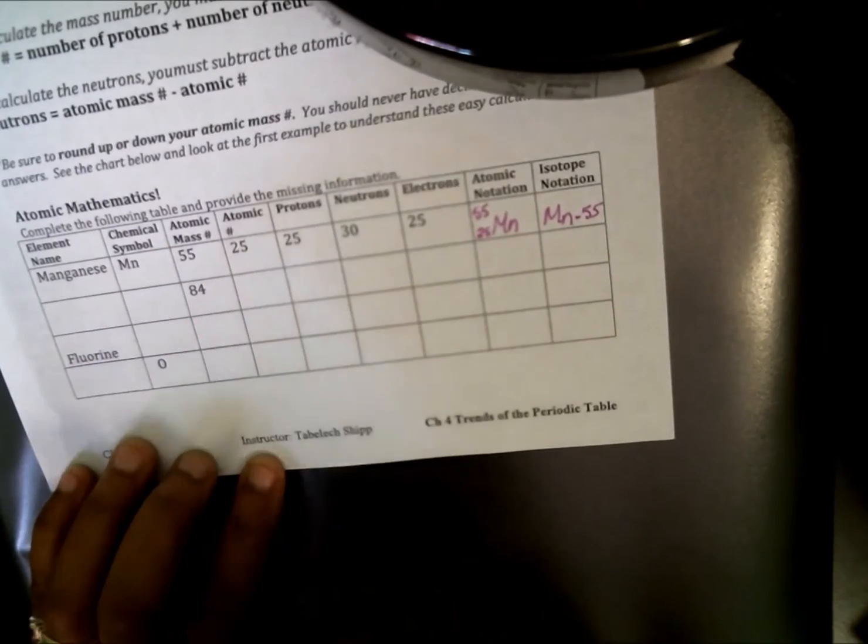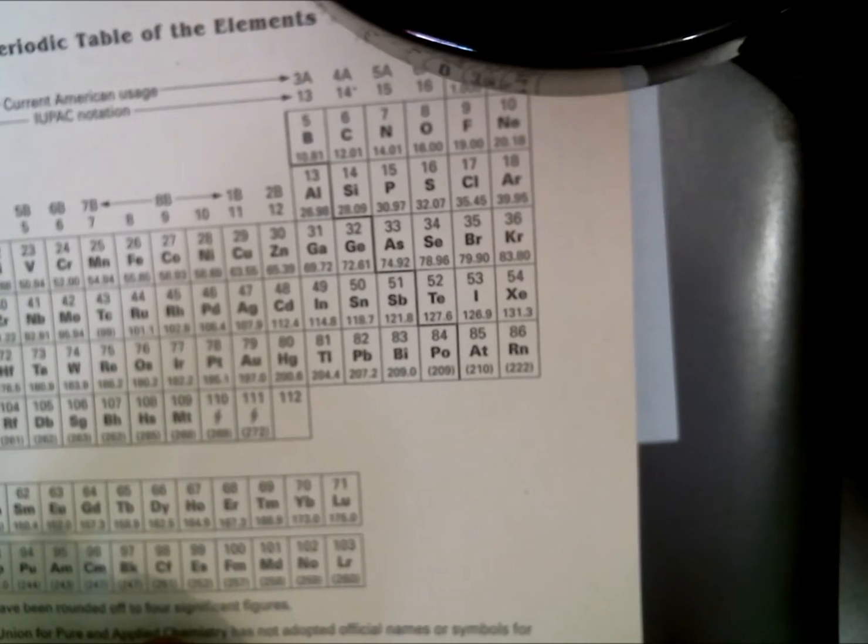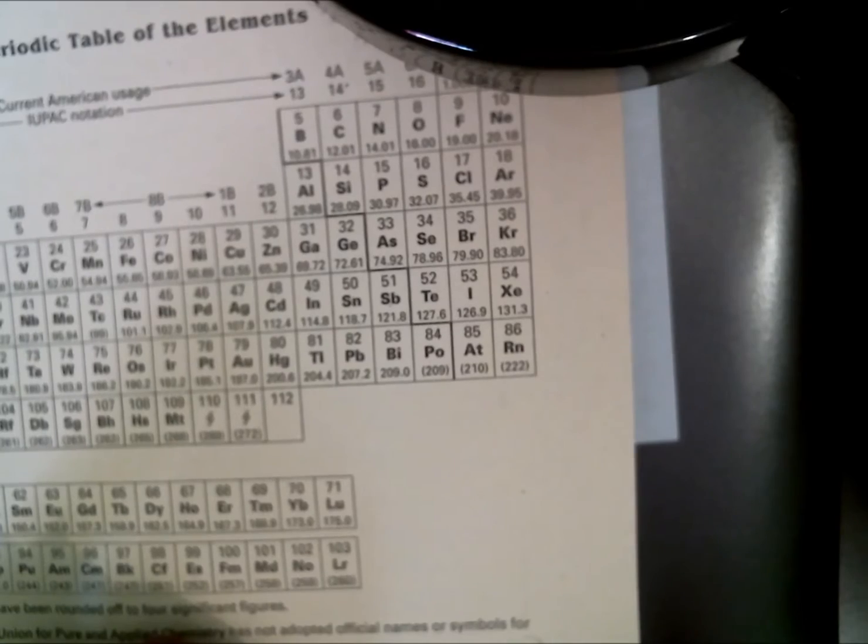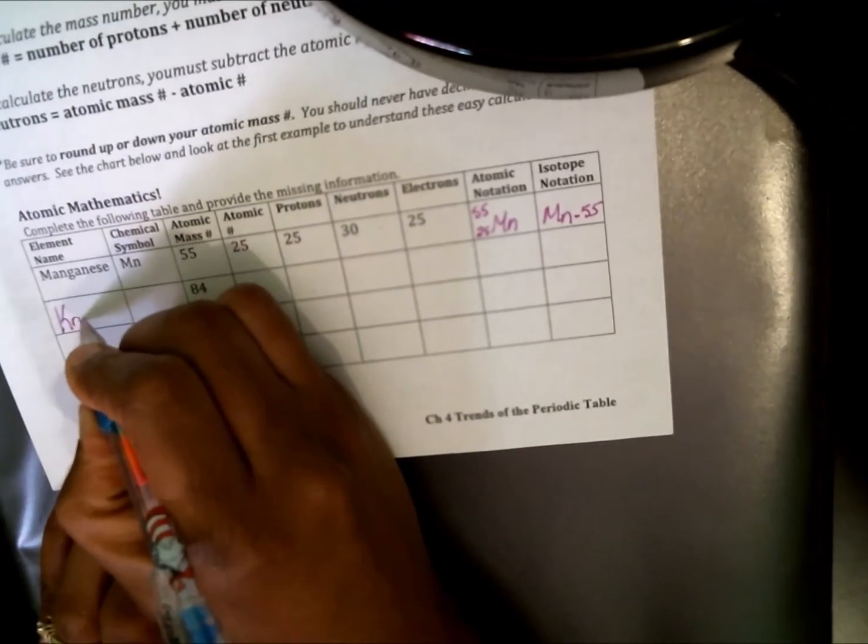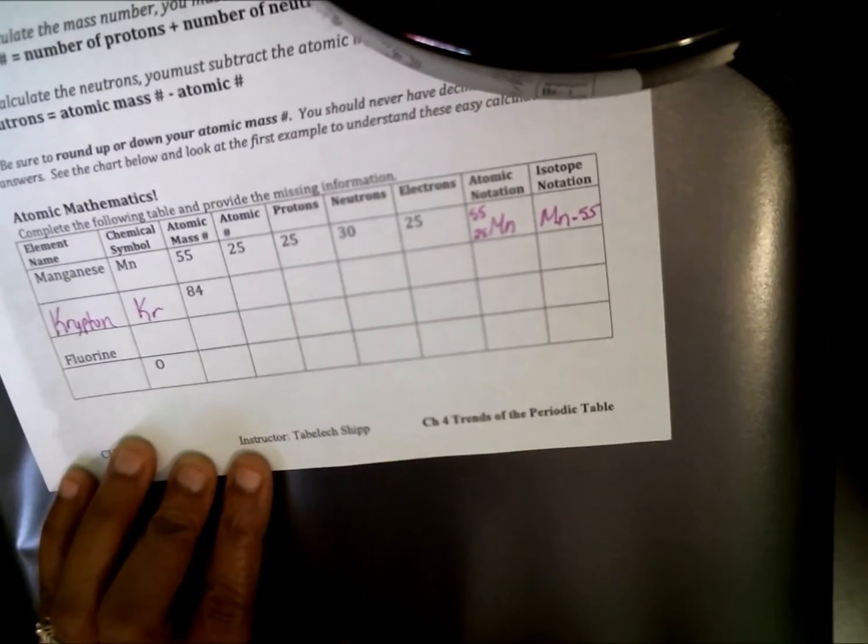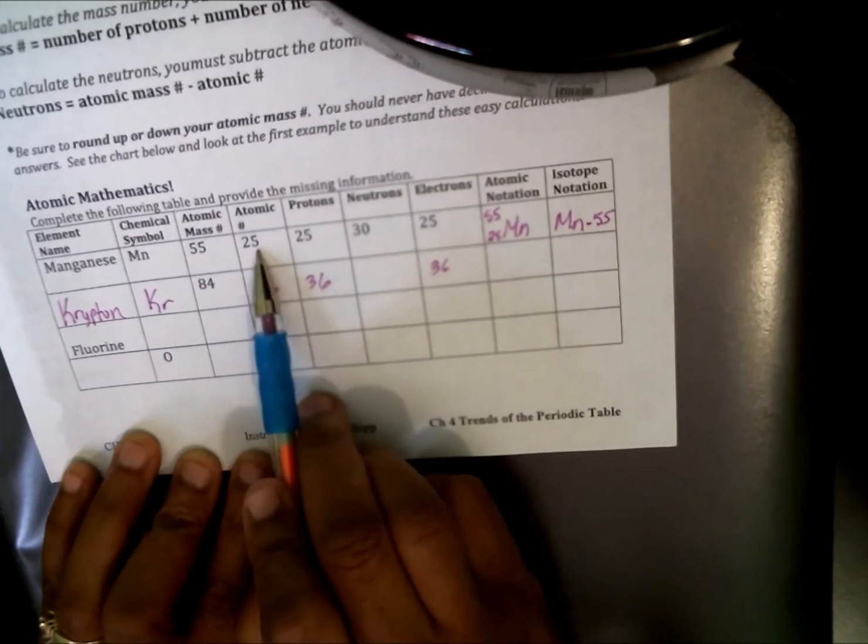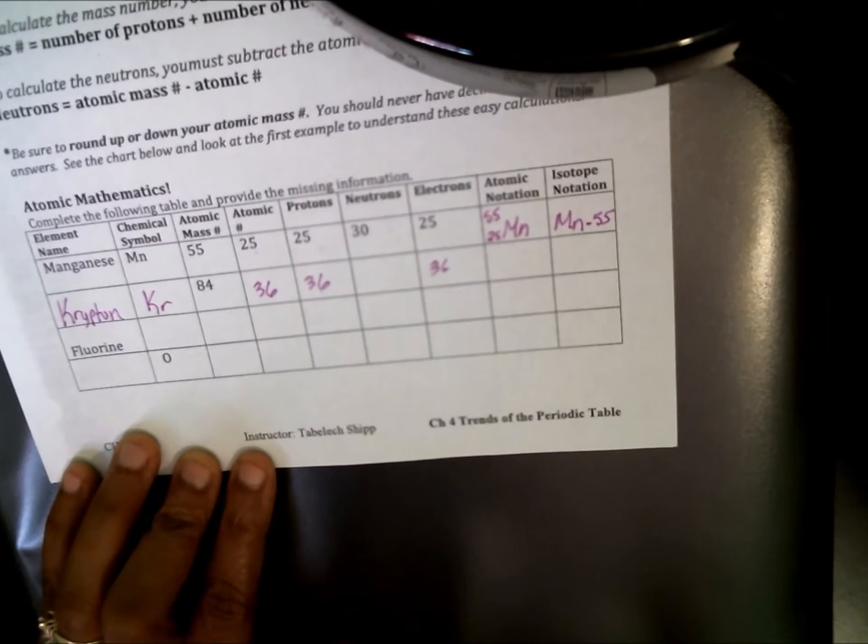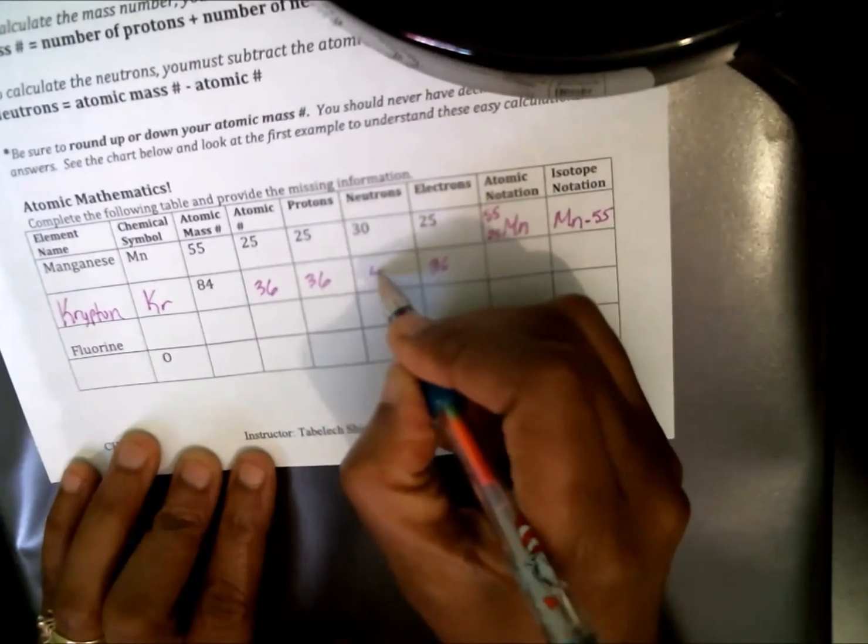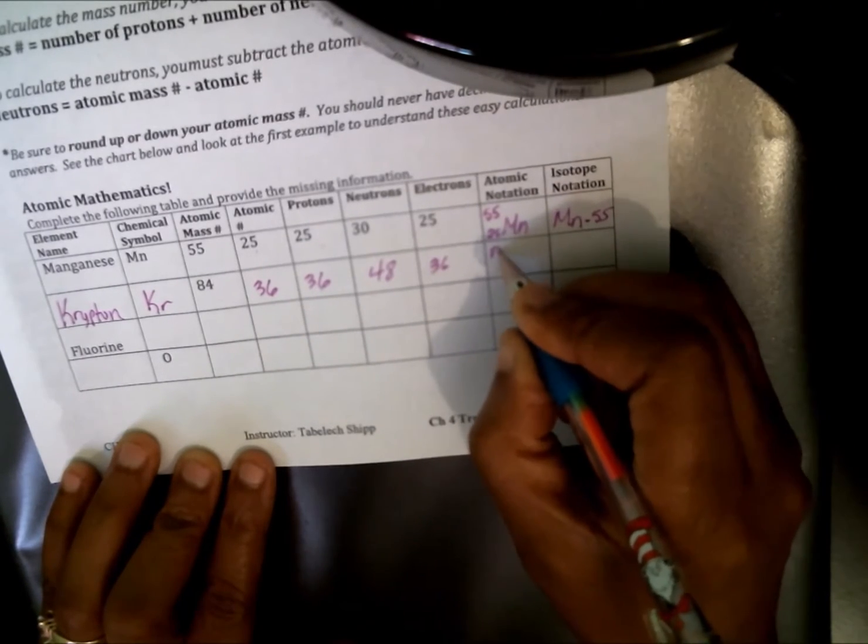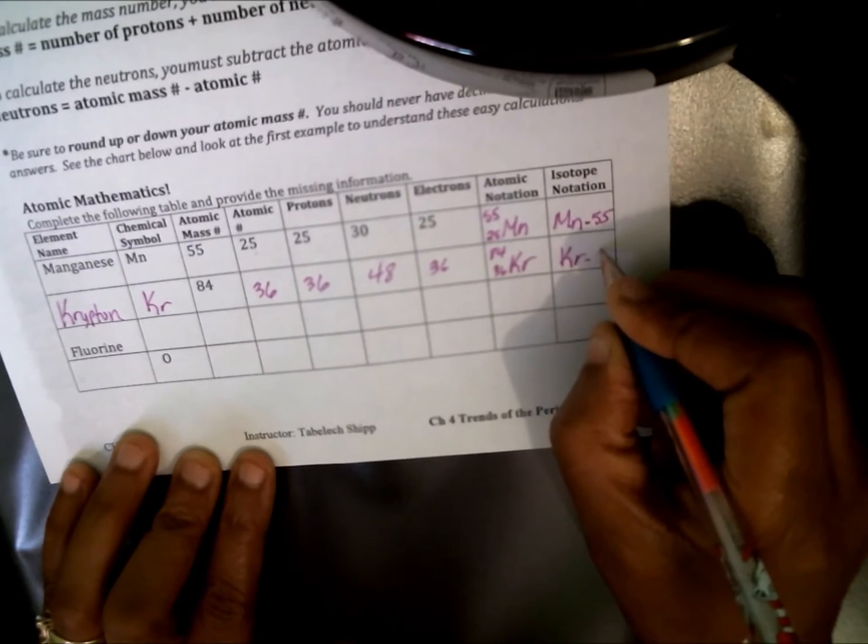In order to get my neutrons, I need to subtract these two numbers here. The atomic mass number from the atomic number. And that's where I get the 30 from. My atomic number, protons, and electrons all have the same number, which is 25. To get my atomic notation, I'm going to simply think about my two A's. The atomic mass number is on top. The atomic number is on the bottom. And then the chemical symbol is Mn. The isotope notation is just simply the chemical symbol dash the atomic mass number. It's just that simple. Take a look at the next row. The only thing I've given you is 84. This is when you'll have to refer to your periodic table to find the element that comes close to 84. If I look closely at my noble gas group, which is the last column, I get krypton, which is 83.80. Atomic number is 36.